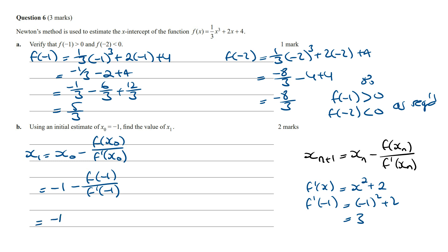And so this is going to become -1 minus f(-1) we worked out to be 5/3 and then divide by 3. Simplifying this, this is going to be -1 minus 5/9. -1 can be written as -9/9. And so this is going to be -9 minus 5 which is equal to -14 and then over 9.